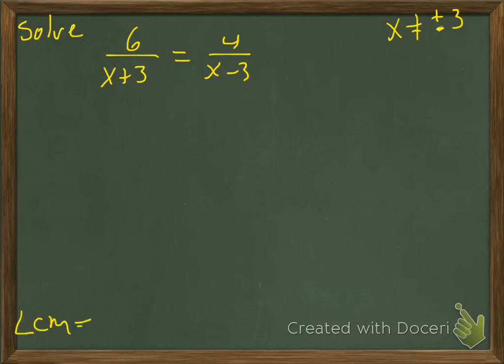Like when we were adding and subtracting rational expressions, we needed to know what the common denominator or the LCM is. Here it's going to be (x+3)(x-3). And just like what we did before, we're going to clear the fractions by multiplying everybody by the LCM.